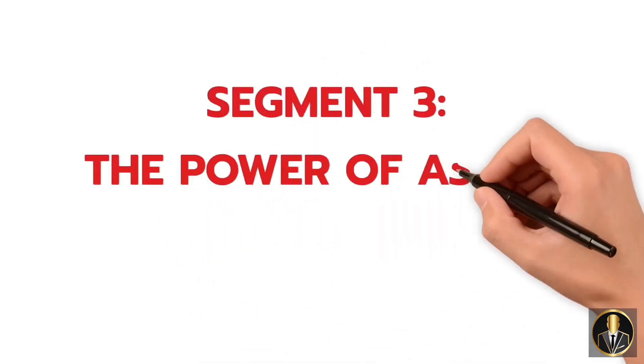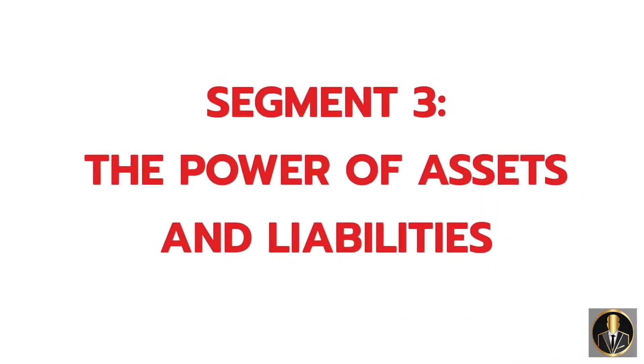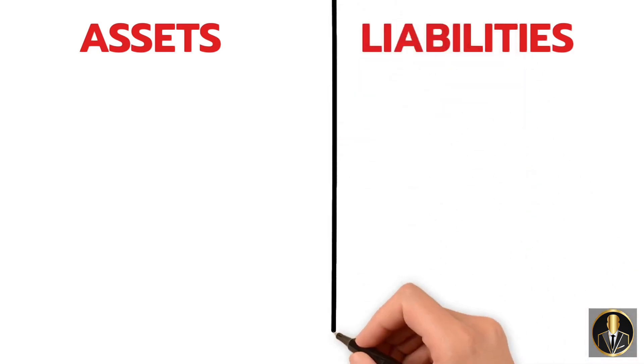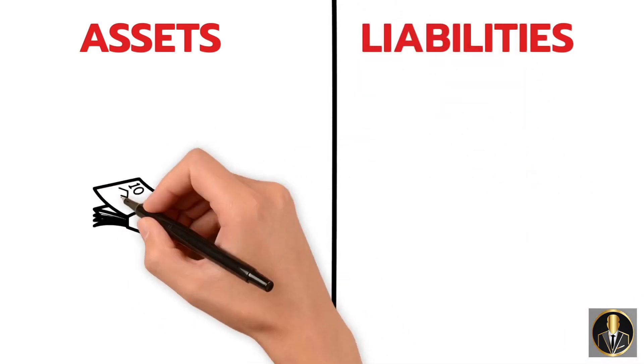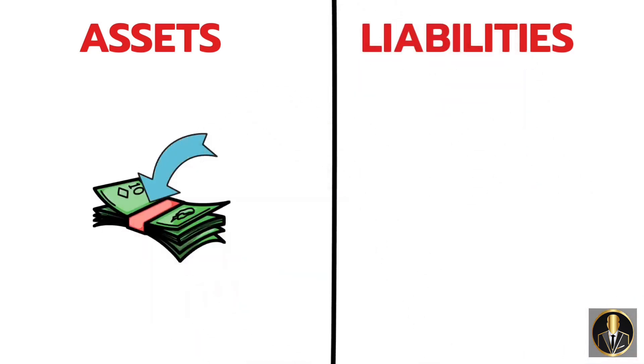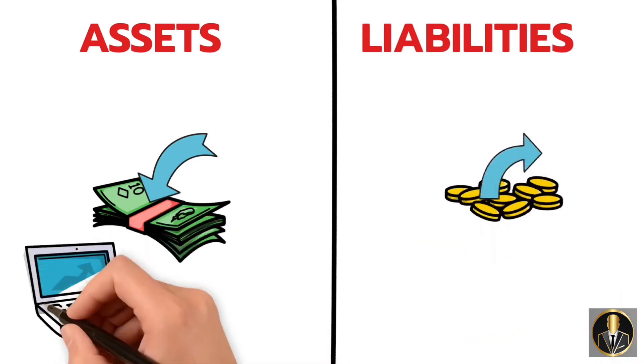Segment 3: The Power of Assets and Liabilities. Do you know the difference between an asset and a liability? Rich Dad Poor Dad presents a game-changing concept. The key to building wealth lies in acquiring assets that generate income rather than liabilities that drain your resources.